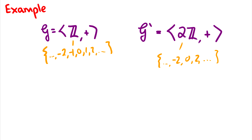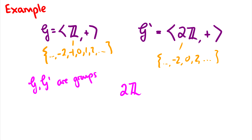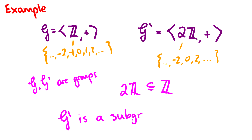The first thing we know from working with these before is that g and g' are groups. The important thing here is that g' satisfies being a group, but also we have that the even integers is a subset of the integers, which means that for every element in g' it's also going to appear in g. They're both groups with the same operation. Since 2ℤ is a subset of ℤ, therefore we can say that g' is a subgroup of g.